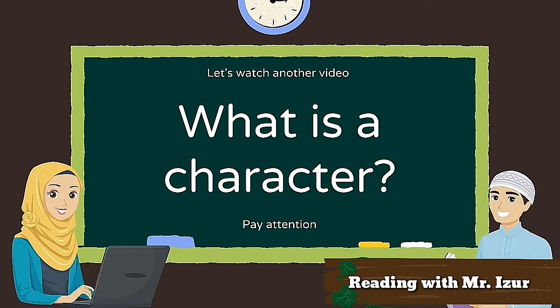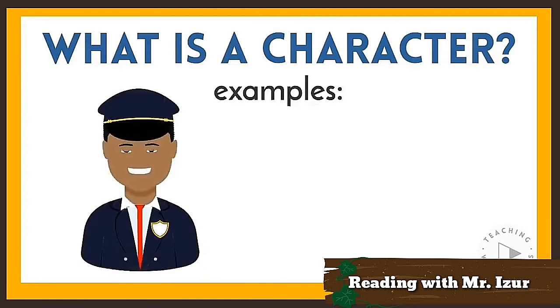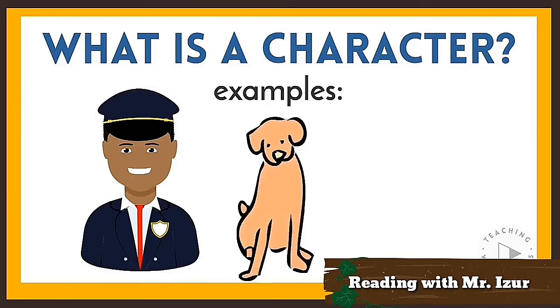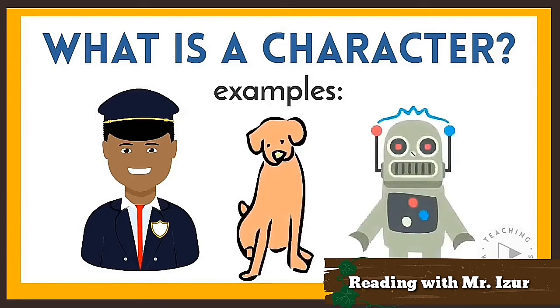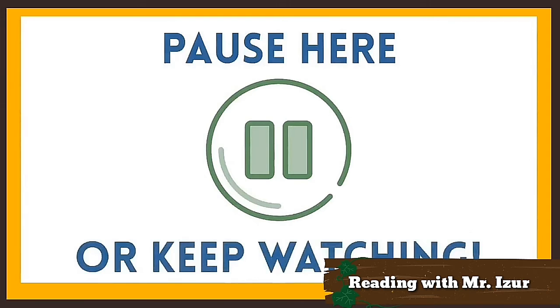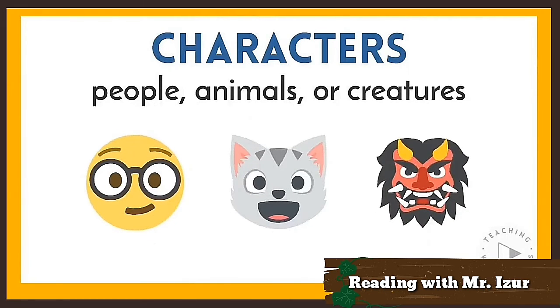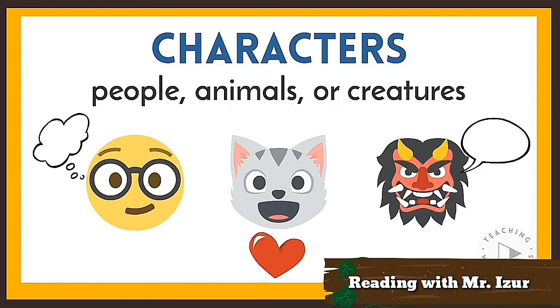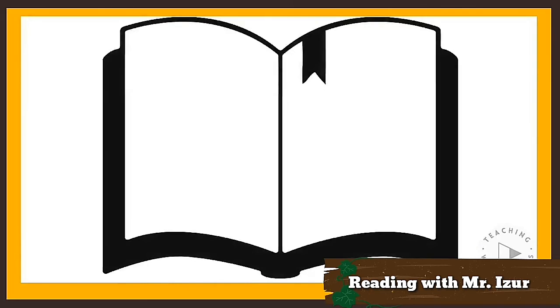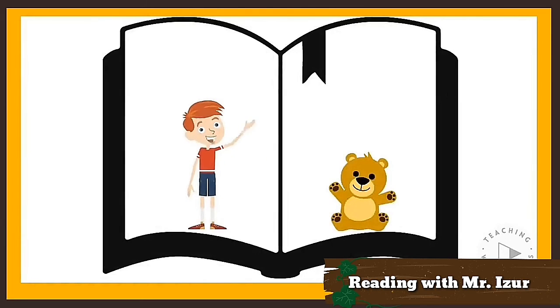Are you ready, guys? Here we go. Can you figure out the definition of a character from the following examples? A police officer can be a character, a dog might be a character, a robot can even be a character. So what do you think the definition of character is? Pause here to think, or keep watching to find out. Characters are the people, animals, or creatures in a story. Characters can think, feel, or act.